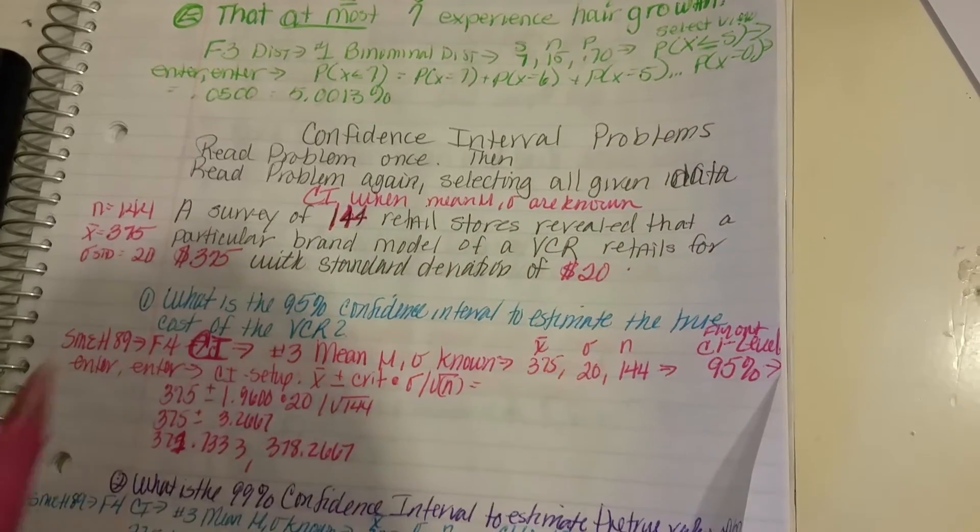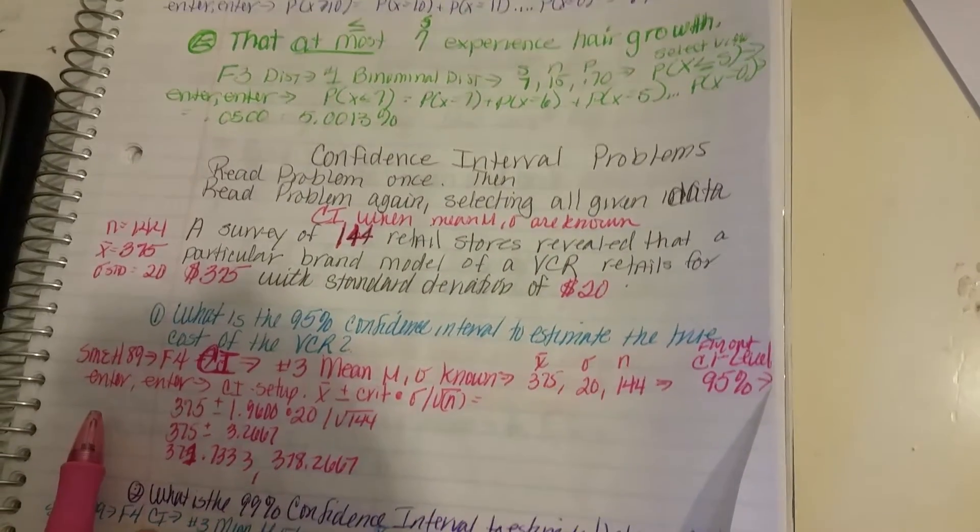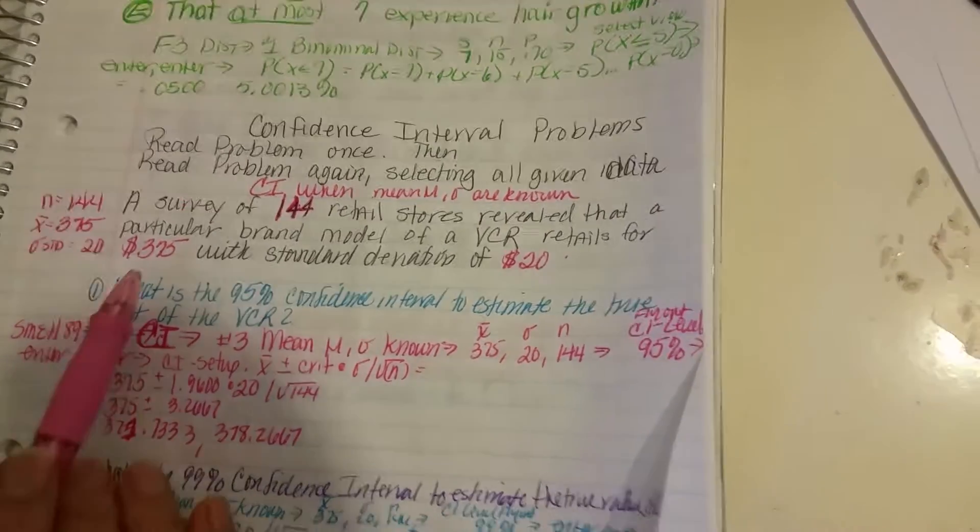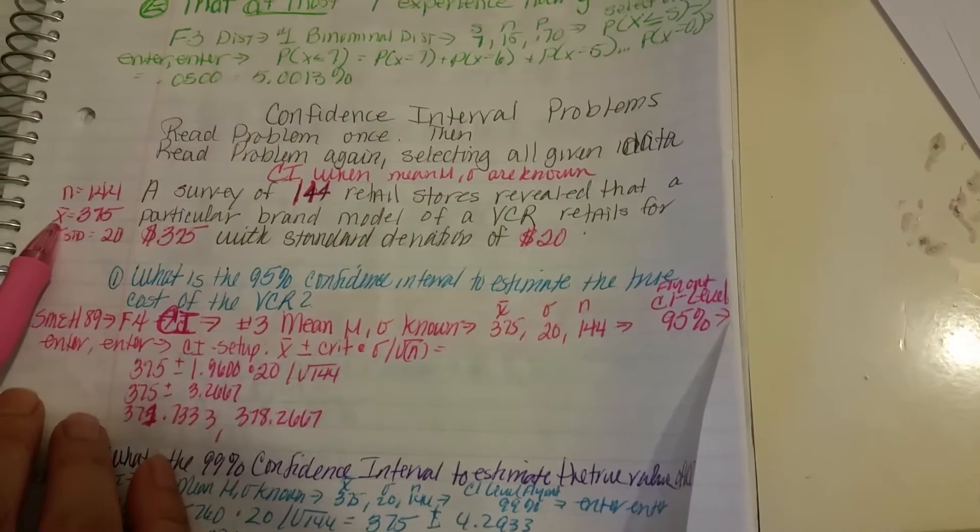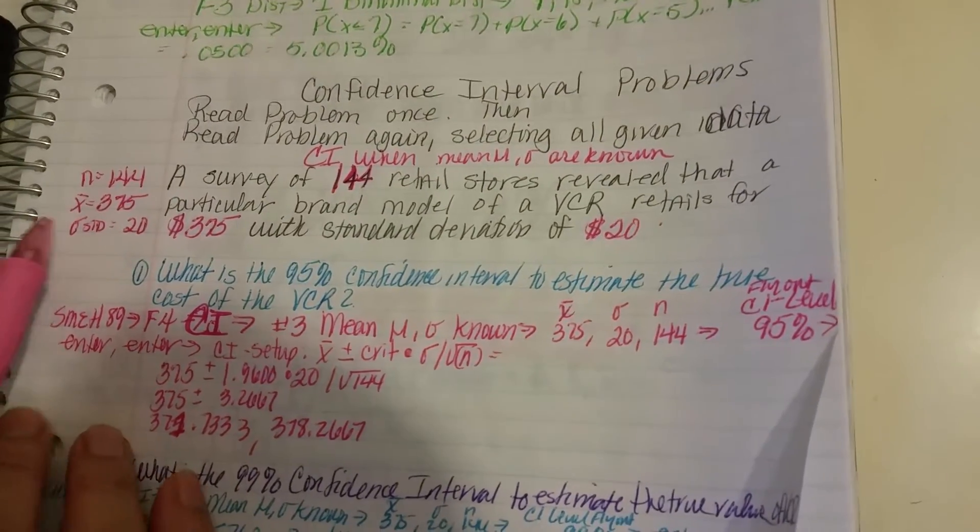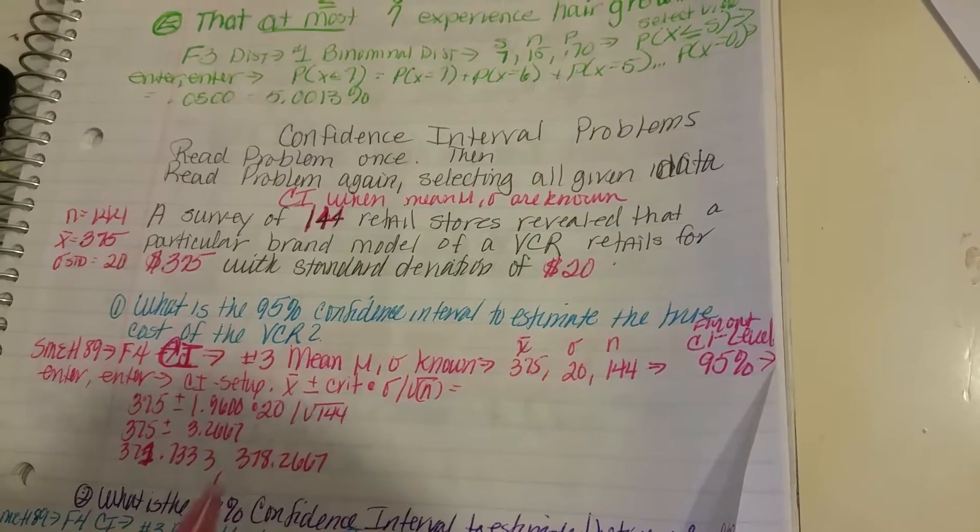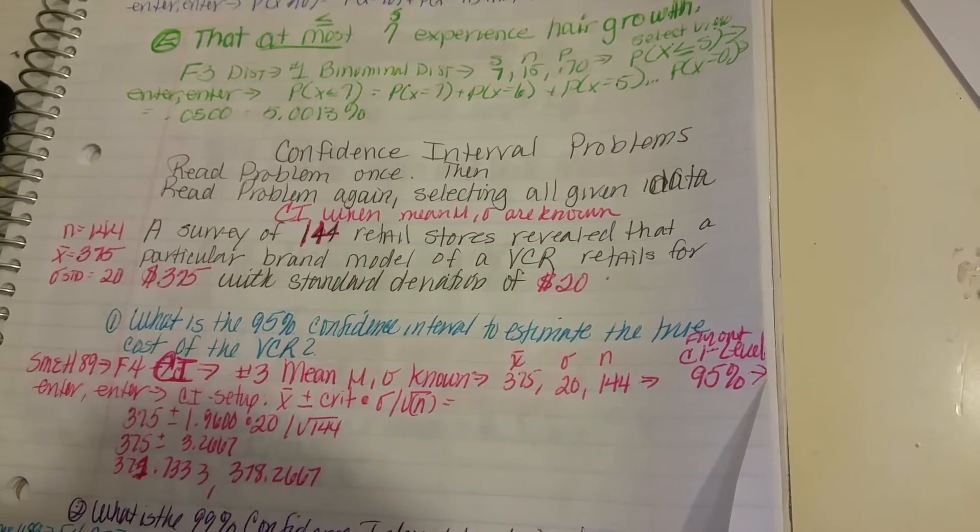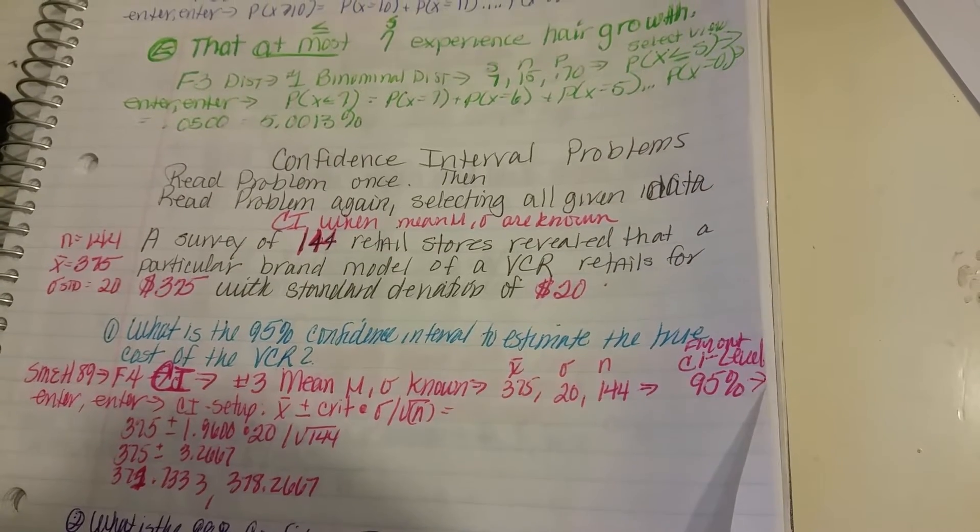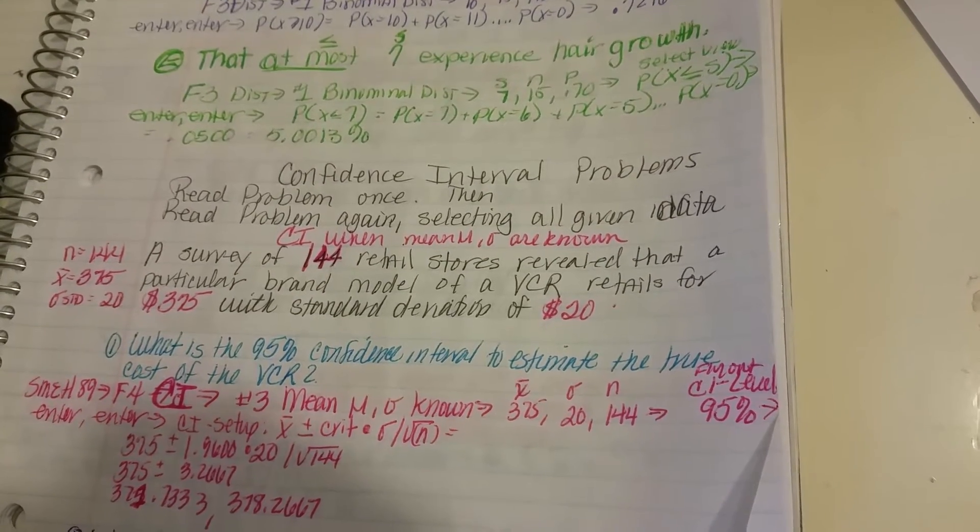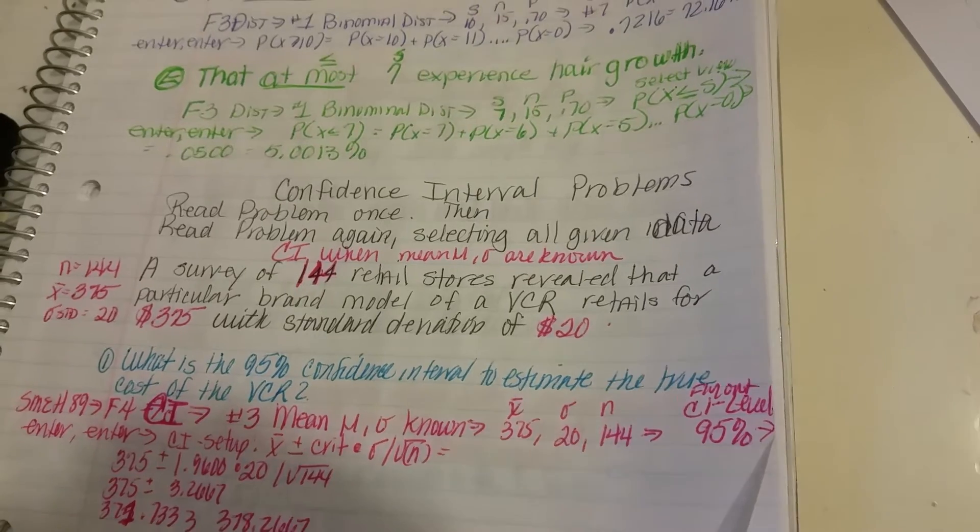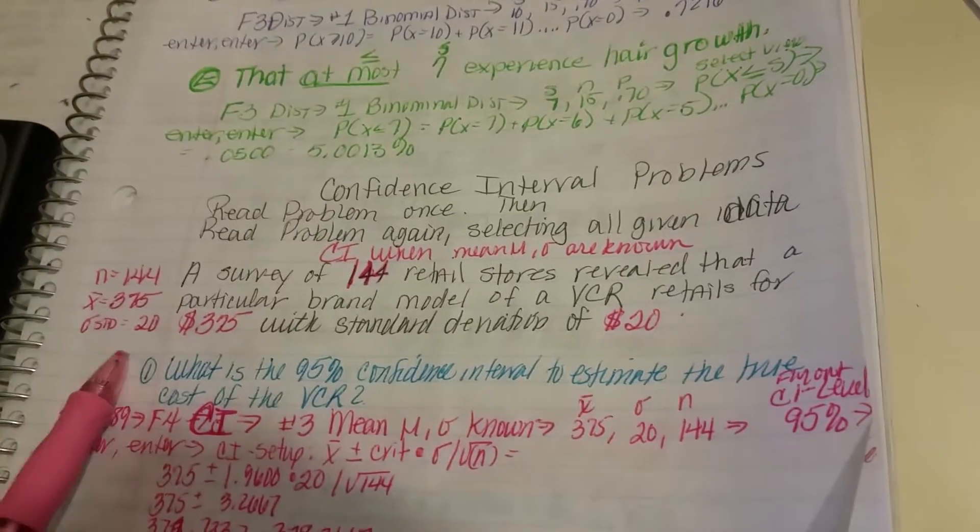Retail stores revealed that a particular brand or model of VCR retails for $375. That's the X bar. That's the mean price of all the VCRs they have in the store with a standard deviation of $20. It could be $300, $395 or $355 within that range. That's the standard deviation of $20.